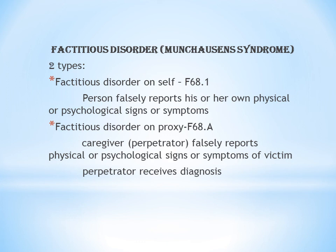The code for factitious disorder on proxy is F68.A. Additionally, for factitious disorder on proxy, you should also code child or adult abuse, neglect, or maltreatment — using T74 (confirmed) or T76 (suspected) codes.